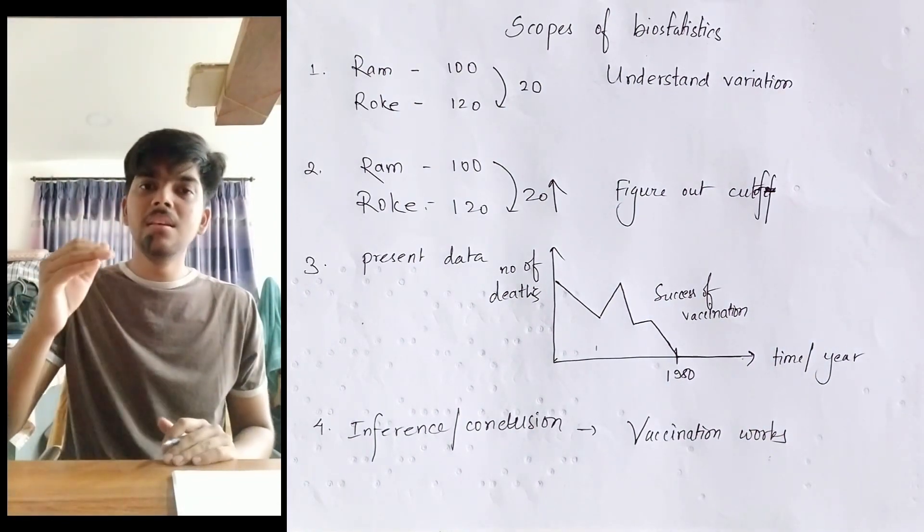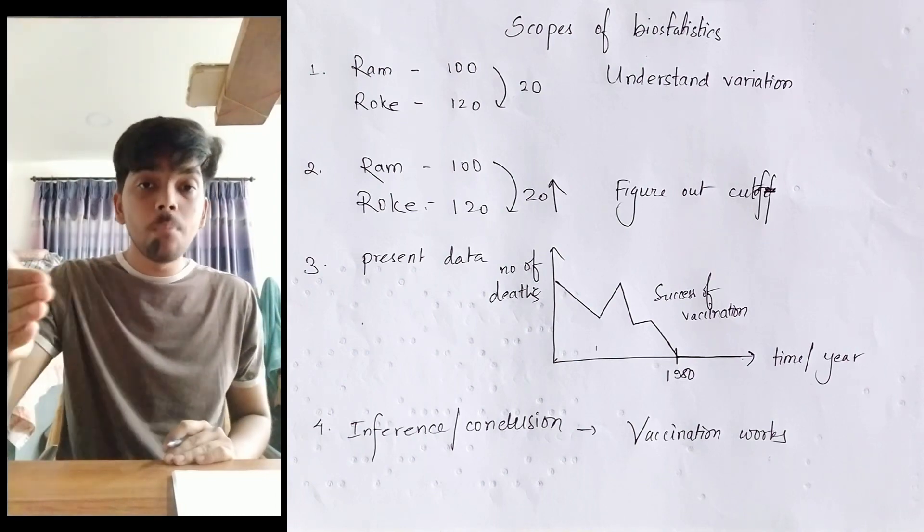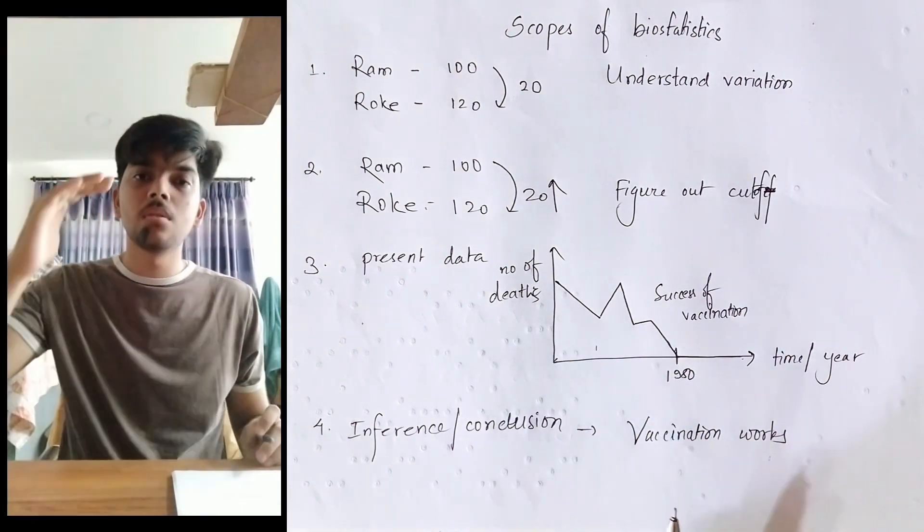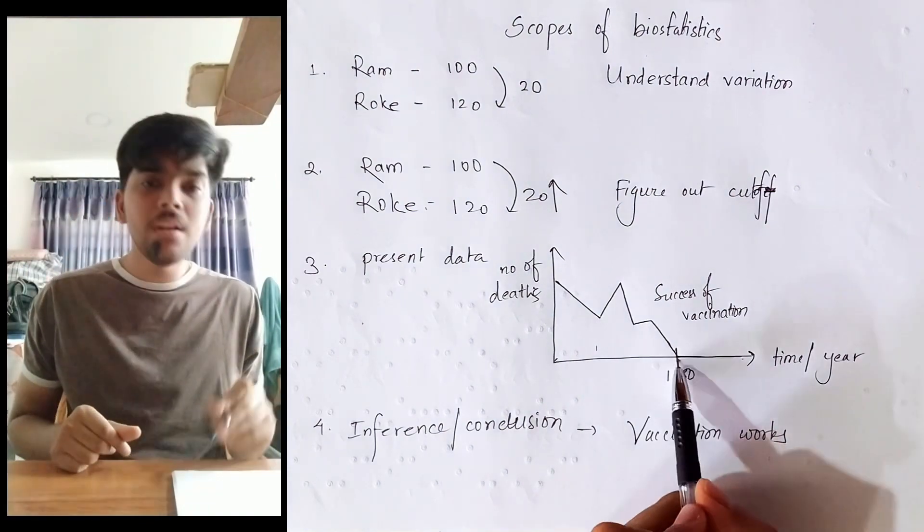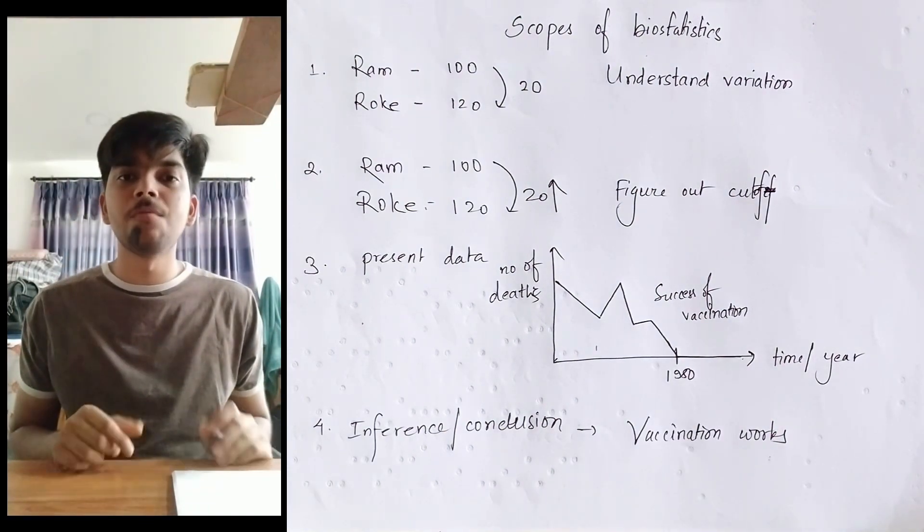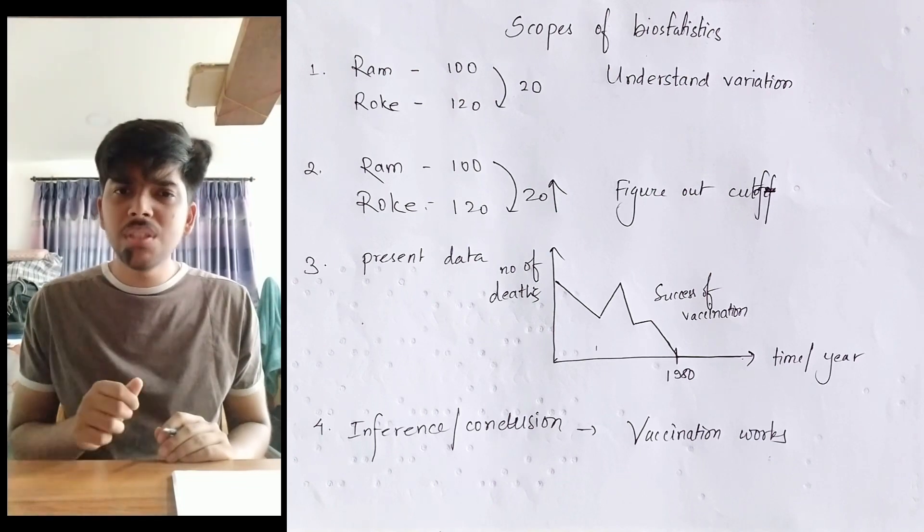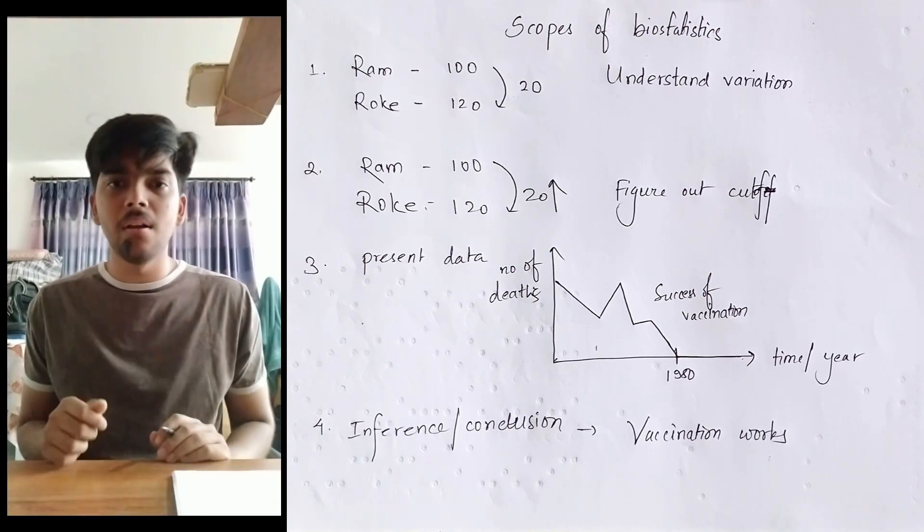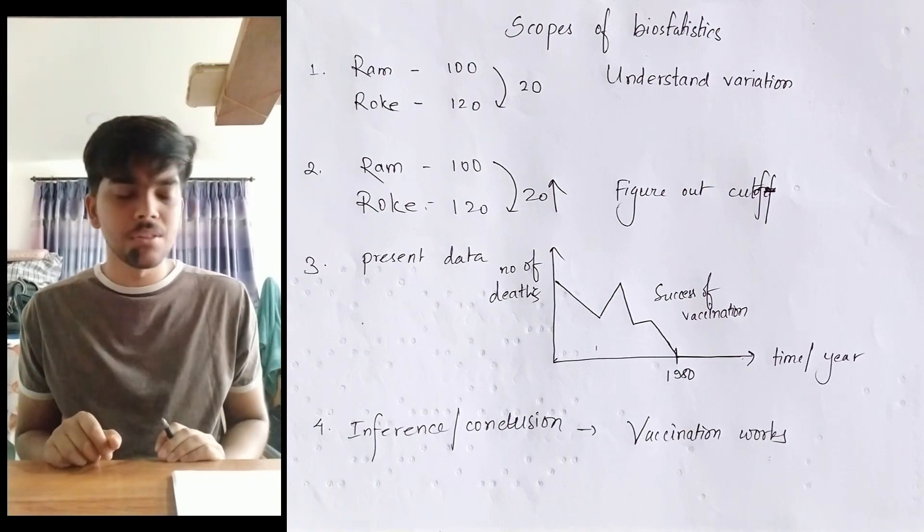As the vaccine against smallpox developed over time, the number of deaths due to smallpox also decreased to a point that smallpox is finally eradicated, which is a really good thing. It's a huge achievement in the field of medical science.